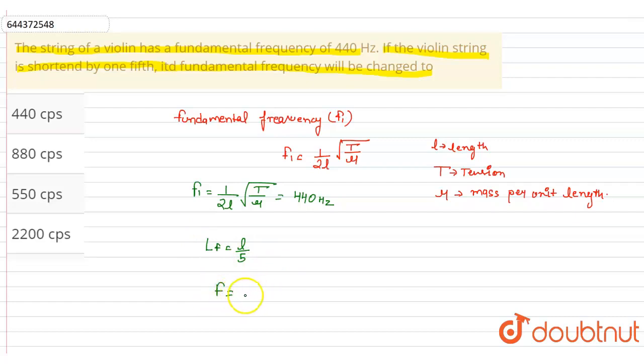Now f is equal to 1 by 2L under root T by mu. Tension and mu are the same, so 2 into L by 5 and T by mu. So it is equal to 5 by 2L under root T by mu.